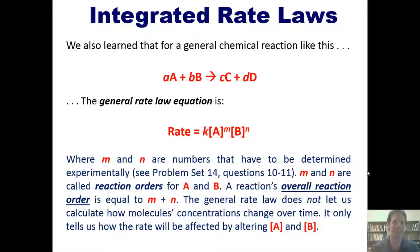In other words, m and n are not the same as coefficients a or b in the balanced stoichiometric equation, although sometimes they occasionally can be, but if so, it's completely coincidental. m and n are called reaction orders for a and b. A reaction's overall rate order is equal to m plus n.